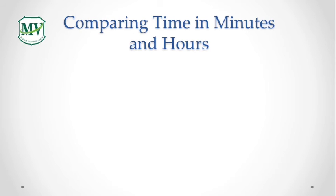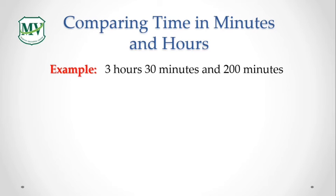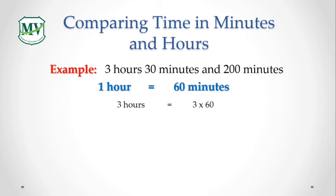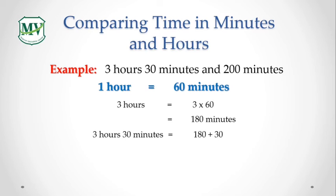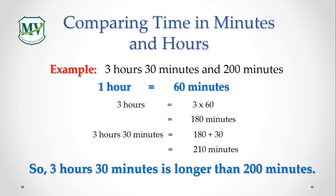Comparing time in minutes and hours. Look at the example: 3 hours 30 minutes and 200 minutes. Do you remember? 1 hour equals 60 minutes. 3 hours is 3 times 60, equals 180 minutes. Therefore, 3 hours 30 minutes is 180 plus 30, equals 210 minutes. So, 3 hours 30 minutes is longer than 200 minutes.